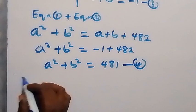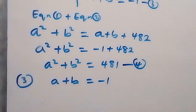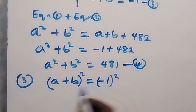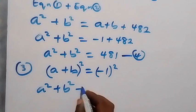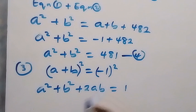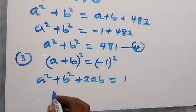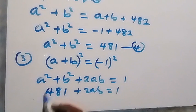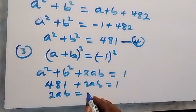From equation 3, we have a plus b equals minus 1. Let's square both sides. When we expand the left side, we get a squared plus b squared plus 2ab, which equals negative 1 squared, that's 1. We already have from equation 4 that a squared plus b squared equals 481, so 481 plus 2ab equals 1. Taking 481 to the other side, we have 2ab equals 1 minus 481, which gives us minus 480.